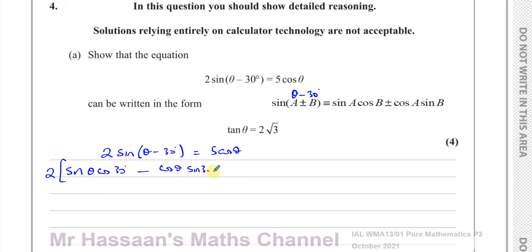So if you expand this, what I'll do first is I'll just write down what this is equal to. Cosine 30 is √3/2, this is √3/2 times sinθ minus, and sine 30 is a half, so there'll be a half times cosθ, and that's equal to 5cosθ.